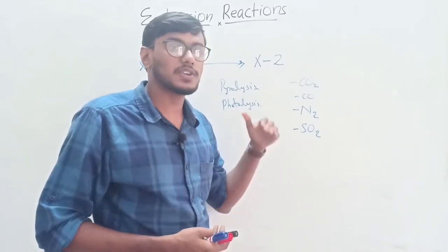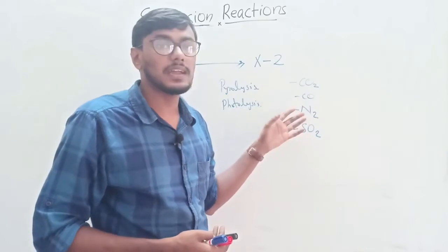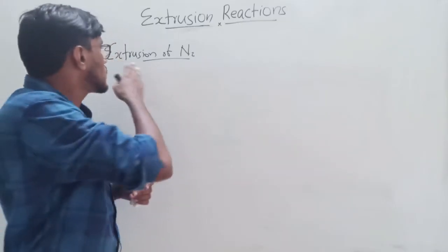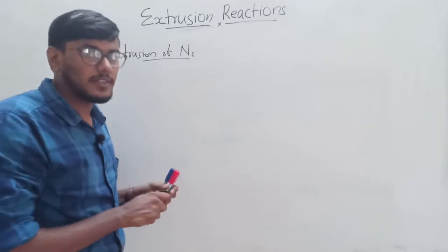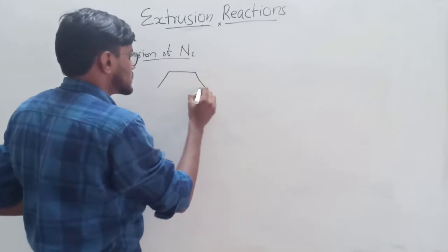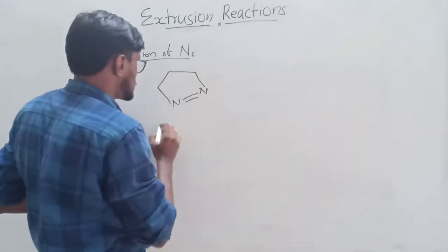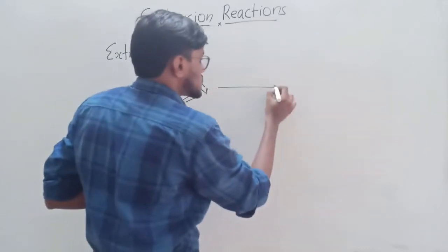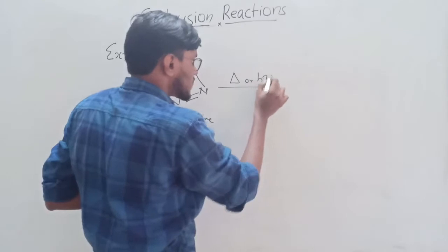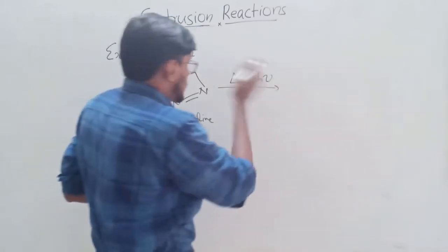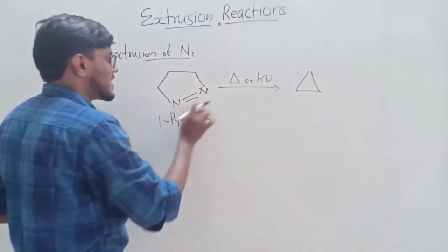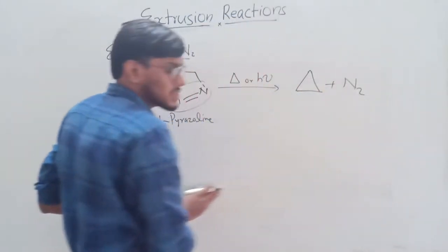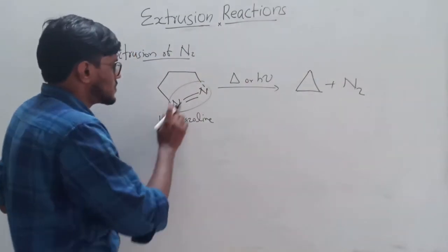We are going to discuss the extrusion reactions of carbon dioxide, carbon monoxide, nitrogen, and sulfur dioxide in detail. First, we discuss the extrusion of nitrogen. Taking one example — this is 1-pyrazoline. This compound on reaction with heat or light undergoes an extrusion reaction. The nitrogen molecule is extruded and forms cyclopropane plus N2 as the byproduct.